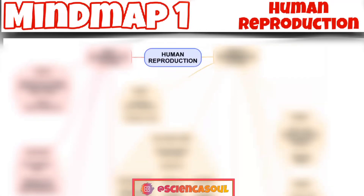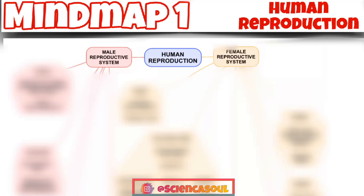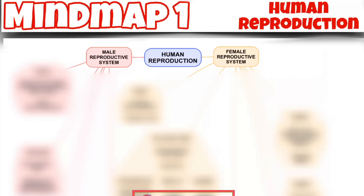Let's start. Human reproduction consists of two reproductive systems: male and female. The male reproductive system consists of a number of sex organs that play a role in the process of reproduction. These organs are located on the outside of the body and within the pelvis.